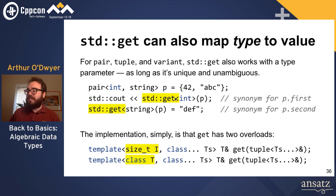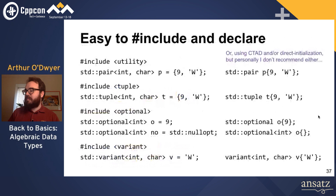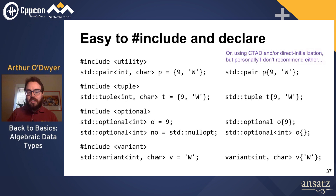std::get can also map a type to a value: you can say get<int>(v) or get<string>(v). There are two overloads — one taking a size_t and one taking a type name. All of these types support easy initialization: pair and tuple use brace initializer sequences, optional<int> o = 9 works fine, optional<int> o = nullopt works fine, and variant<char, int> v = 'a' works fine. They all also support CTAD (class template argument deduction from C++17), though for back-to-basics purposes I recommend staying away from it.